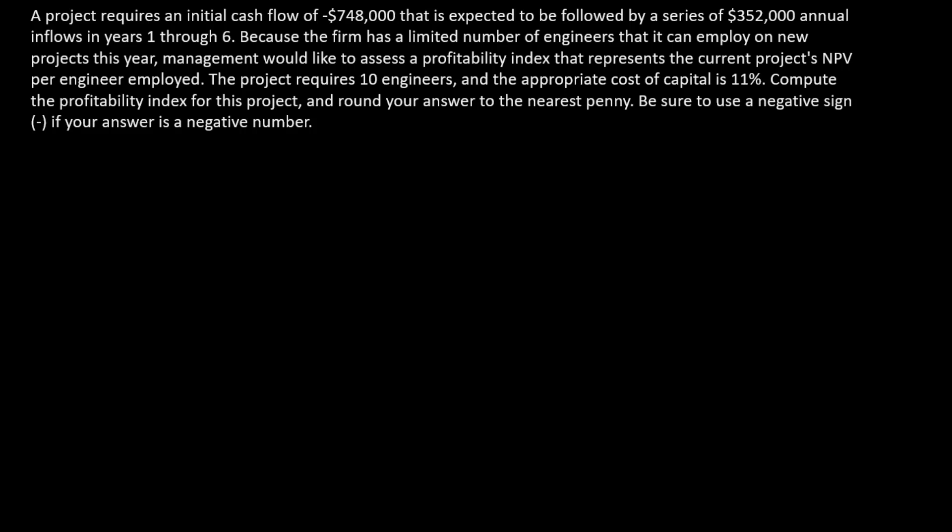We often compute a profitability index for a project in the presence of some type of resource constraint. The resource could be a limited capital budget, or it could be some other resource of the firm, such as a number of skilled employees. Here, the resource is the number of engineers. We've got this project and we can calculate its NPV, but we want to know how much NPV is generated per engineer on the project.